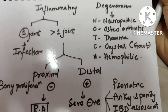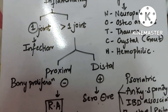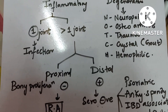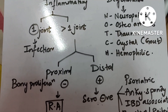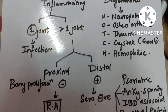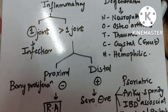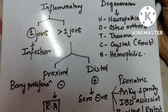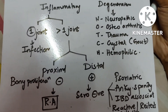For degenerative conditions, the mnemonic is NOTCH: N for neuropathic arthritis, O for osteoarthritis (the most important), T for traumatic arthritis, C for crystal deposition arthritis like gout and pseudogout, and H for hemophilic arthritis. These are the examples to remember under degenerative arthritis.